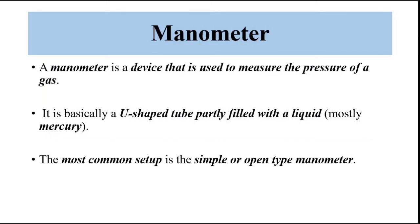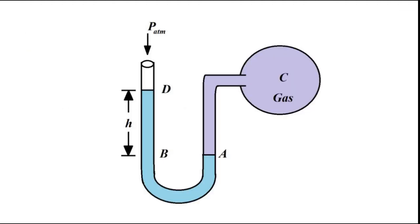A manometer is a device which is used to measure the pressure of a gas. It generally comes in a U-shaped tube which is partly filled with a liquid, mostly mercury. One end of the tube is exposed to the atmosphere — it is kept open — while the other end is connected to the point where the fluid pressure is to be measured.